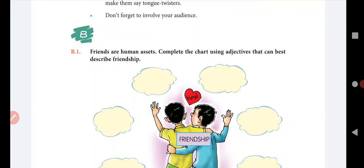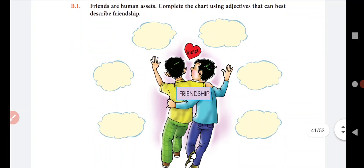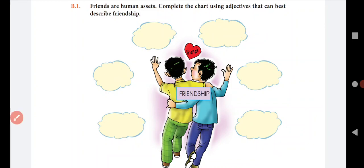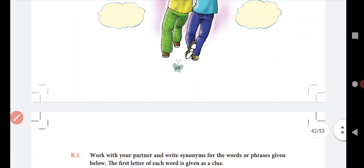Friends are human assets. Complete the chart using an adjective that can best describe the friendship. This is a very easy task. What are the qualities? Like understanding, sharing, caring. So you can write these words in it.